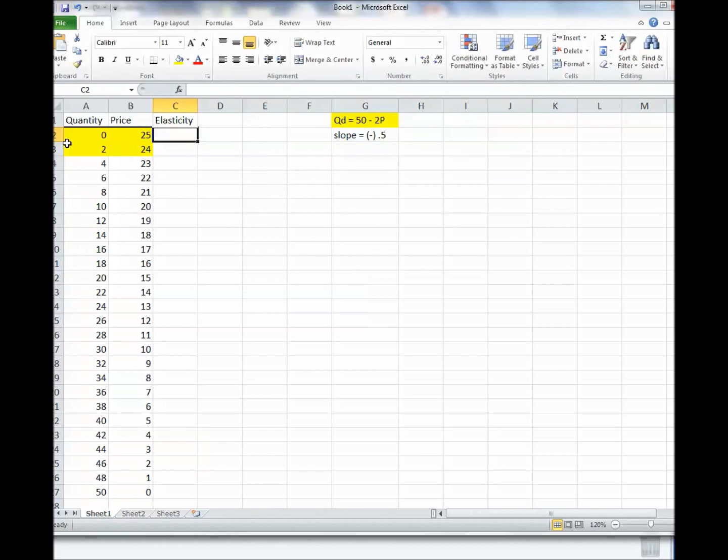But elasticity is 1 over the slope times P over Q. So it would be 1 divided by negative 0.5 times the P value, which is that, divided by the Q value, which is that. Now, you know what? This first one is going to give me an error because I'm dividing through by 0. So we can't do that one, but let's see if it will allow me to copy down. Yeah, it will. And now we can get all of these.